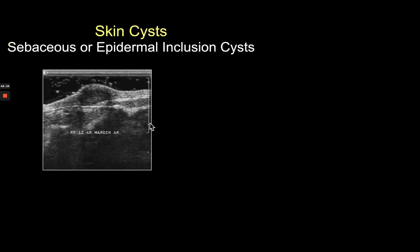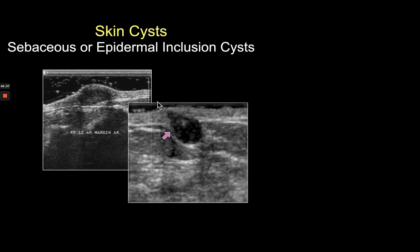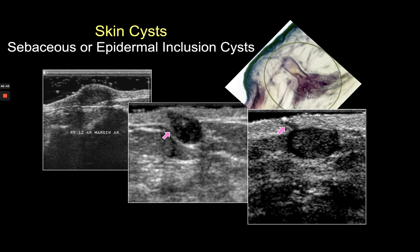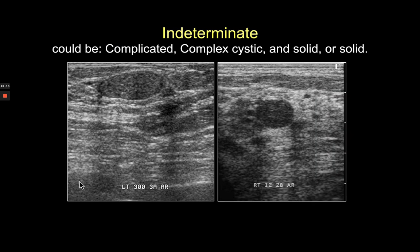Cysts arising from the skin are benign, whether completely within the skin, mostly subcutaneous with a claw sign of skin wrapping around them, or entirely subcutaneous but with a visible gland neck or hair follicle connecting to them. A gel standoff is virtually always necessary for these near-field focusing challenges, sometimes oriented slightly obliquely. These are typically sebaceous cysts or epidermal inclusion cysts, depending on whether there's been squamous metaplasia in the fundus of the gland.